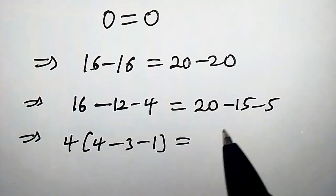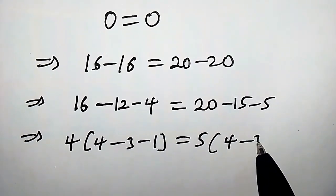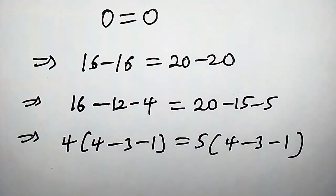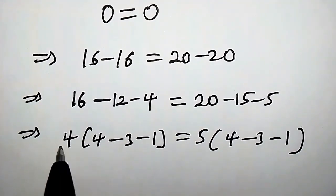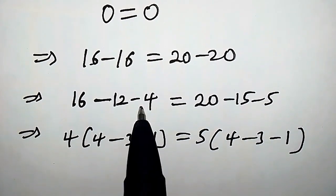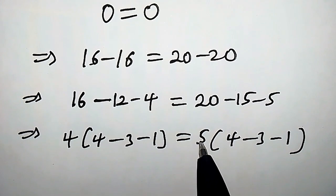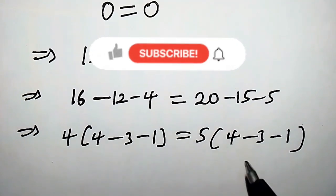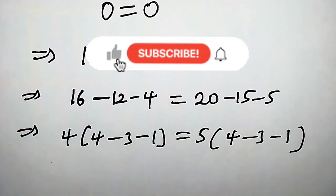We have 5 into 4 minus 3 minus 1. That is 4 times 4 gives 16, 4 times negative 3 is minus 12, 4 times minus 1 is negative 4. 5 times 4 is 20, 5 times negative 3 is negative 15, and 5 times negative 1 is minus 5.